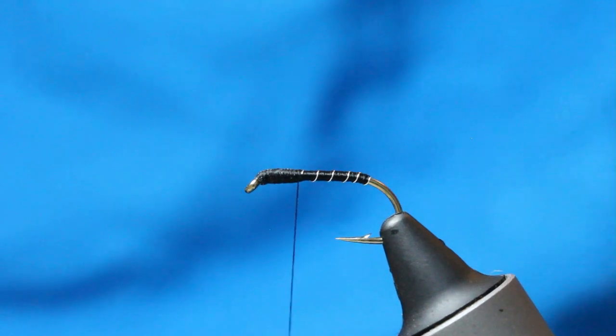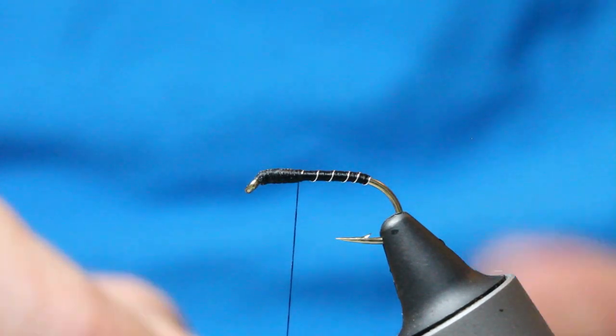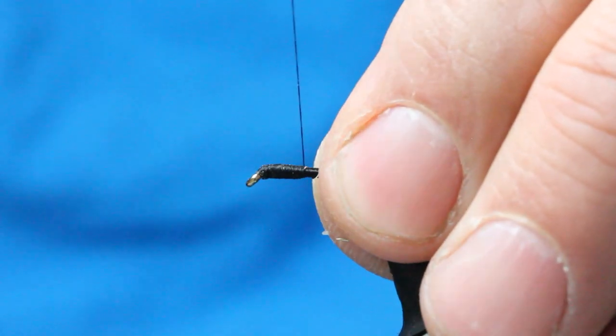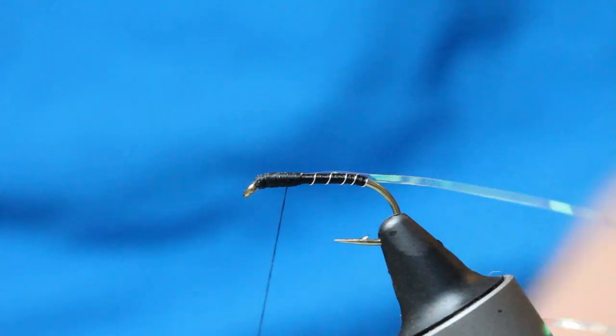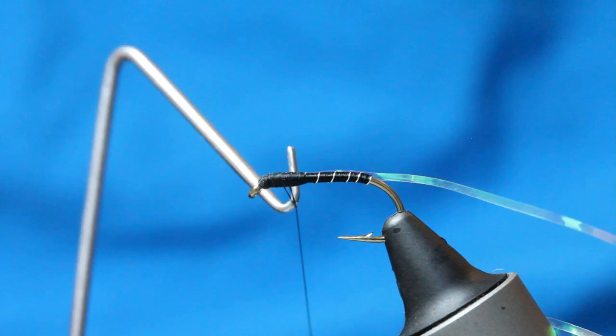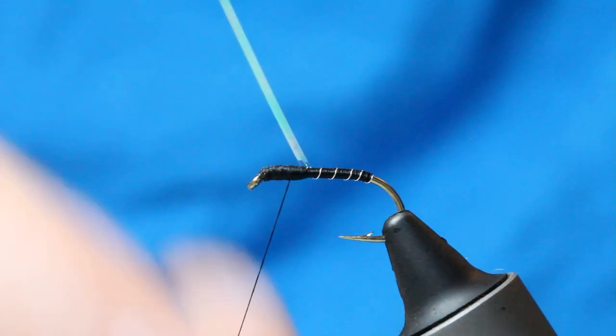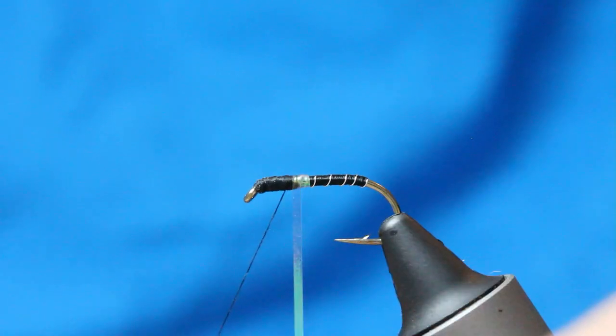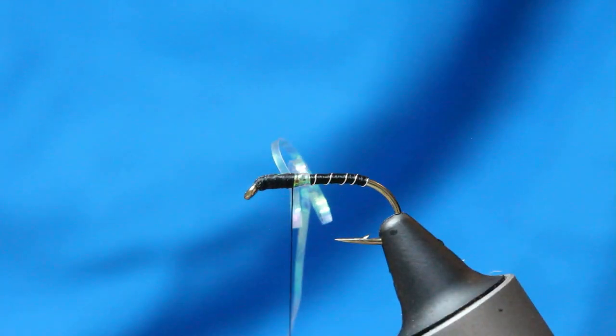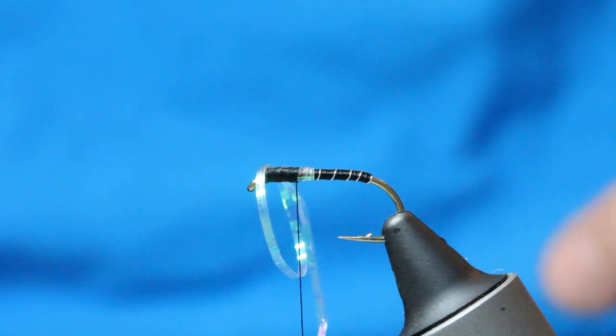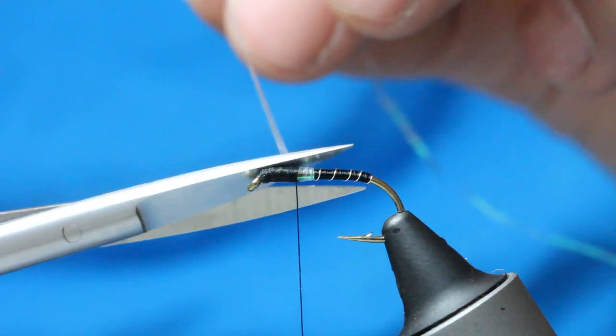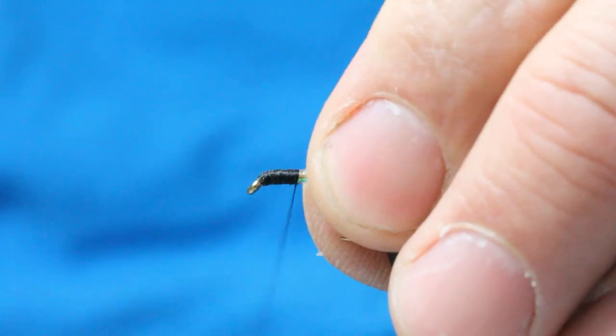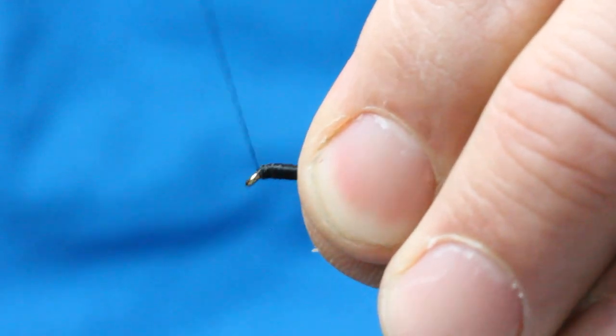I'm just going to take a short length of that and wind it on as a collar, right on the thread, right on this silver wire. Just come up a little bit, stick a whip finish in. You want like a couple of turns of this stuff, a bit like a vicar buzzer really. Couple of turns, lock it off, and then snip away that excess. Now go over the thorax again, over the thorax right to the eye of the hook.